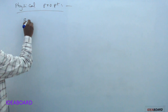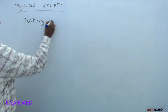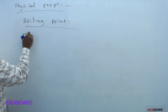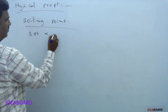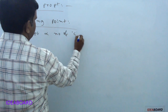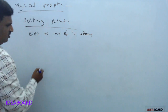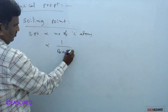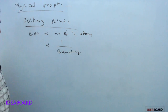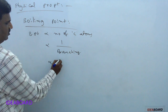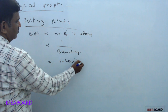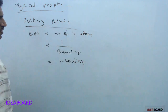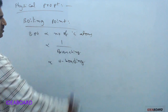Next, regarding boiling points: the boiling points of alcohols are directly proportional to the number of carbon atoms, inversely proportional to branching, and directly proportional to hydrogen bonding. When carbon atom number increases, molecular weight increases, so boiling point increases.